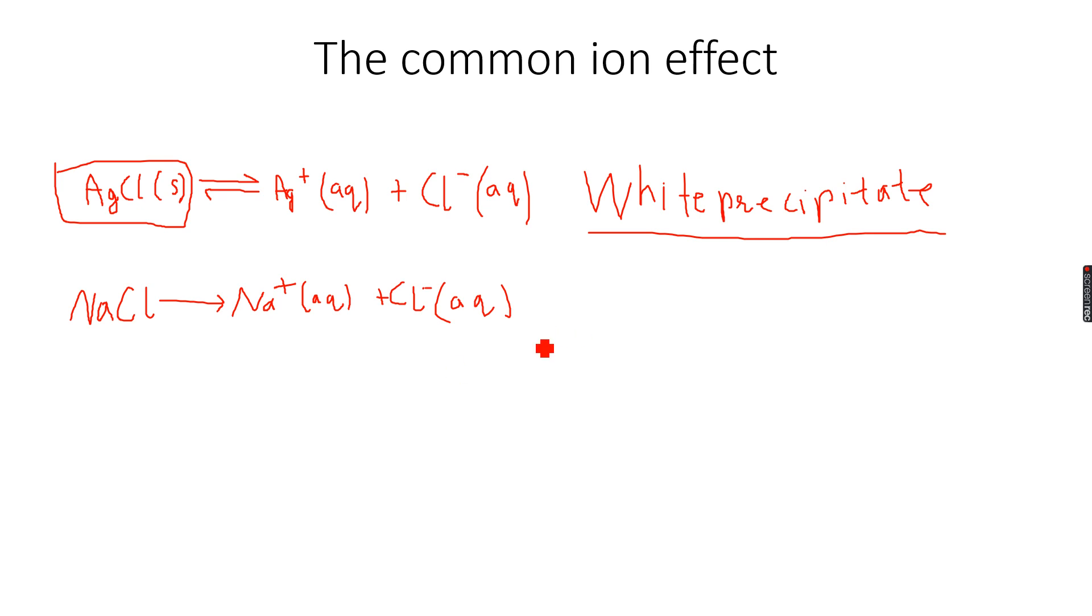So in this case, the Cl negative ion is common to both of them, and as its concentration increases upon the addition of NaCl, more of AgCl solid is formed. Because Le Chatelier's principle will be taken into account, more precipitate will be formed.